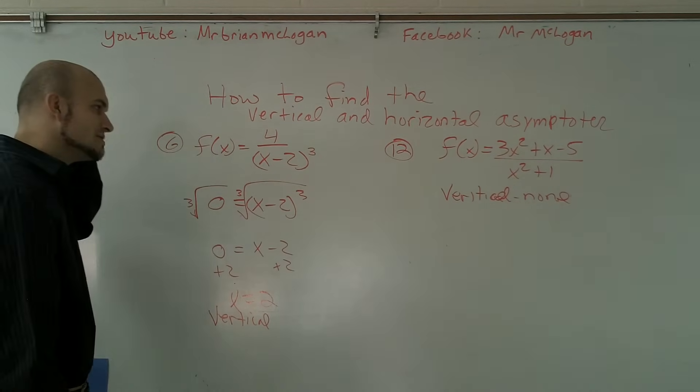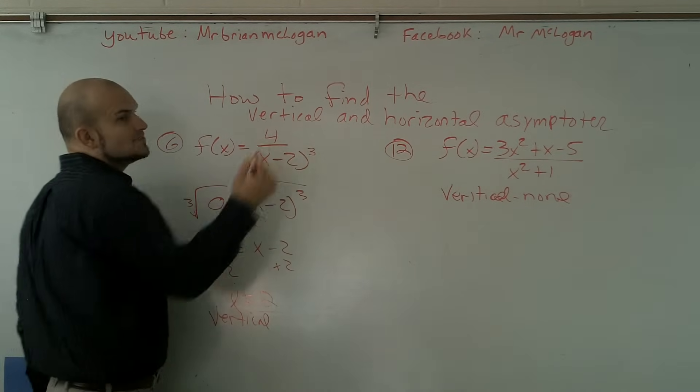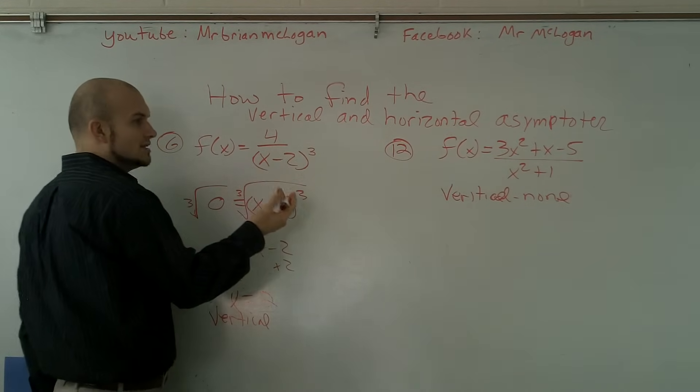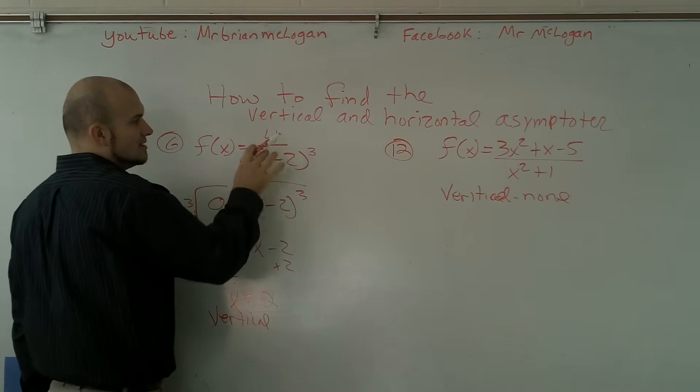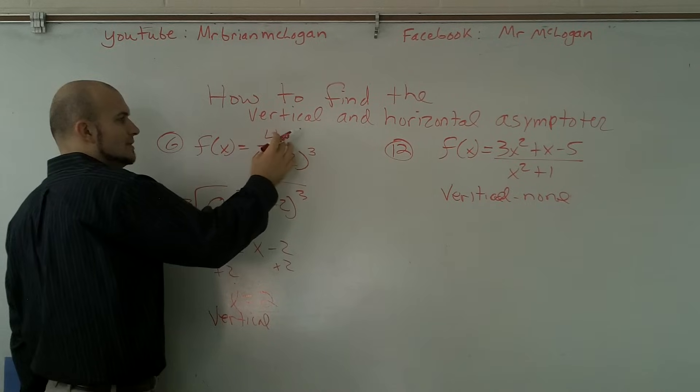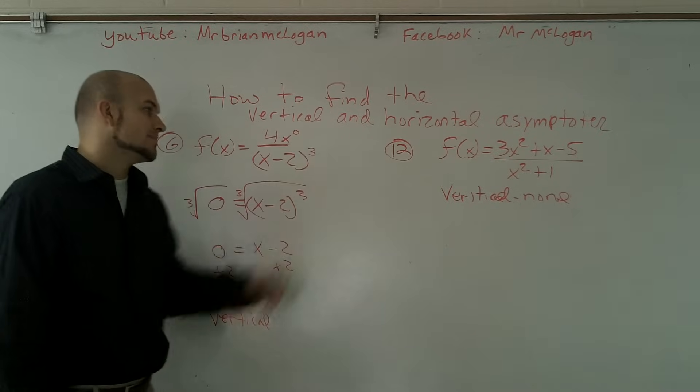And now, to go ahead and find the horizontal asymptote. Remember, the horizontal asymptote, what we need to do is we need to look at your exponents of your leading coefficient. If we have our leading—if our degrees up here is what we look at, and here you can pretty much write, we have x to the zero, because there's nothing written there, so it's x to zero.